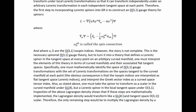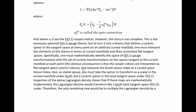This is the necessary spinorial O(3,1) gauge theory, but to turn it into a theory that defines a Lorentz spinor in the tangent space at every point on an arbitrary curved manifold, one must interpret the elements of this theory in terms of curved manifolds and their associated flat tangent spaces. Specifically, one must mathematically identify the space of O(3,1) gauge transformations with the set of Lorentz transformations on the spaces tangent to the curved manifold at each point. The consequence is that the isospin indices are interpreted as flat tangent space Lorentz vector indices, and the Greek vector index is interpreted as a curved space tensor index. One must also take the spinor to transform as a scalar in the curved manifold under GL(4), but as a Lorentz spinor in the local tangent space under O(3,1).